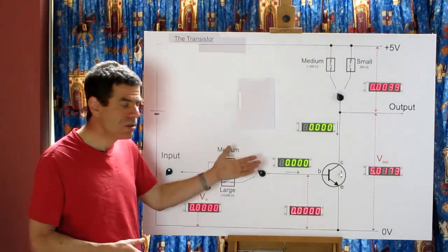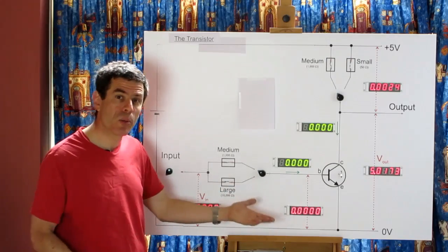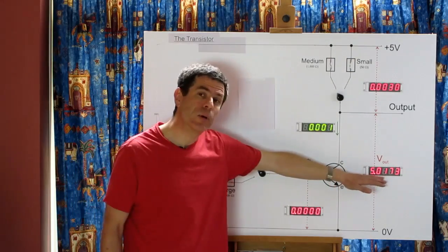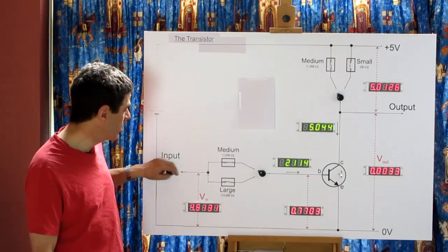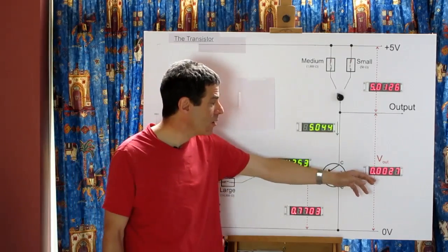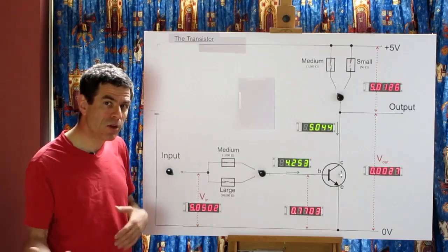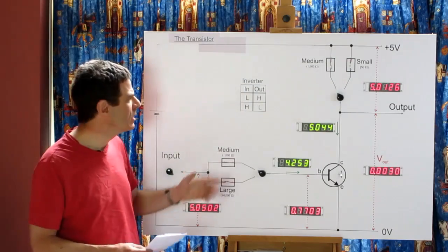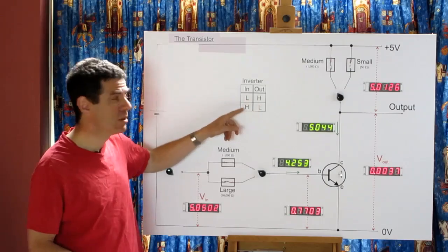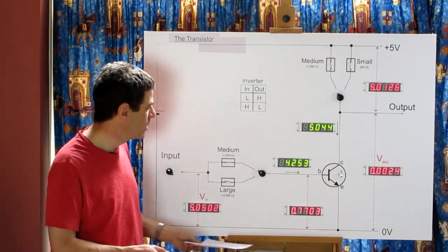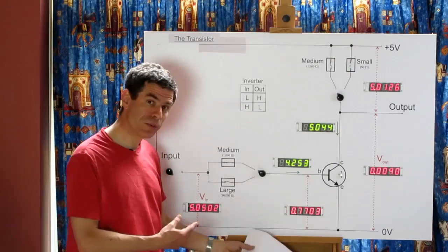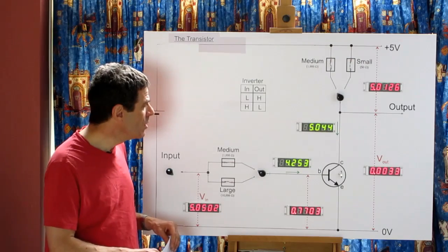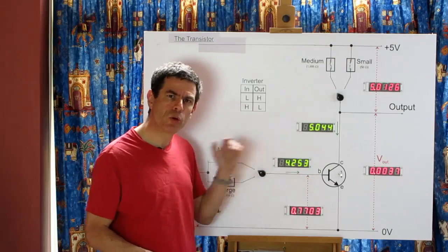As it happens, this circuit provides our first logical operation. In broad terms, if we put a low input we get a high output; if we put a high input we get a low output — you get out the opposite of what you put in. This is the inversion operation. We can encapsulate it in a little table: low in, high out; high in, low out. It's quite a simple but quite useful operation. The megaprocessor uses quite a few of these in various ways. For more complex operations, we need to use more transistors.